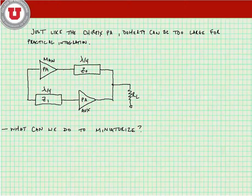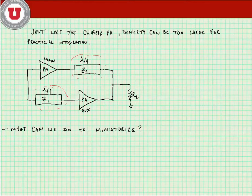Today we're going to be looking at more practical implementations of the Doherty power amplifier. Just like the Chireix amplifier, the Doherty can be too large for practical integration because of these quarter-wave transmission line elements. So what we're going to do is try and figure out ways to miniaturize the Doherty.